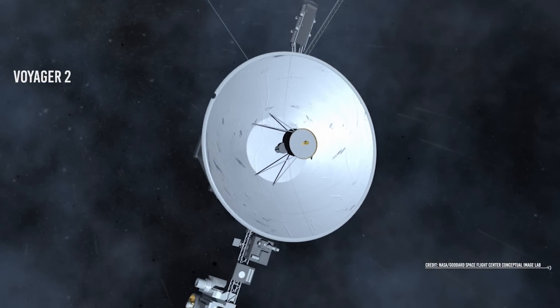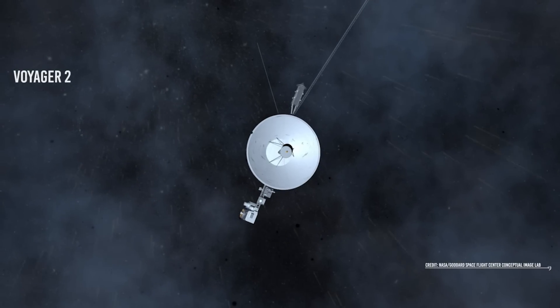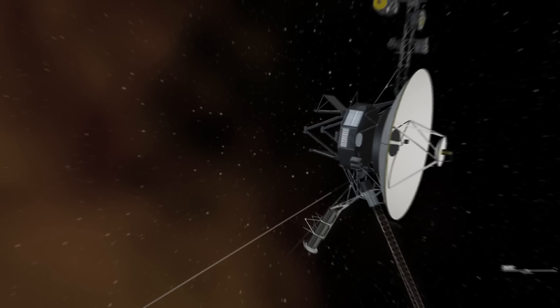So, Voyager 2, along with its sister Voyager 1, became the only two objects created by humans that have left the solar system.